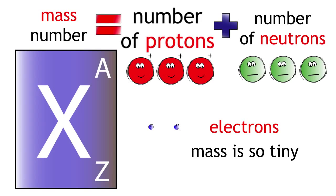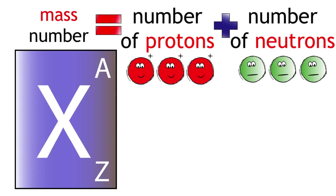If the number of protons always stays the same in a particular element and we are ignoring the mass of electrons, it must mean the number of neutrons is causing the difference in mass.